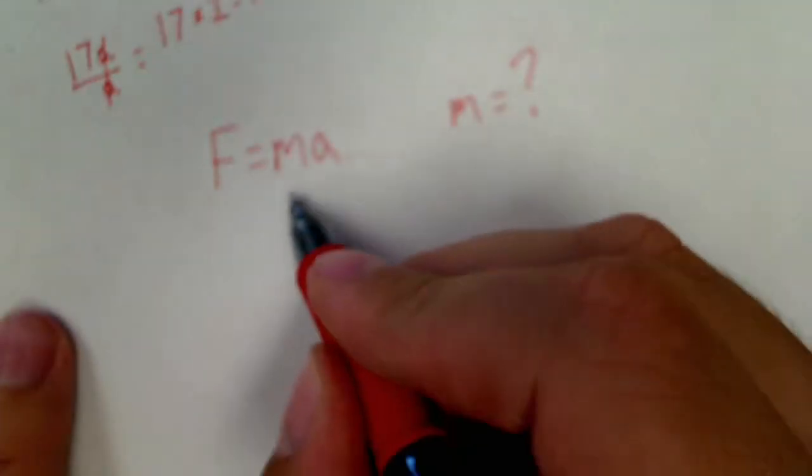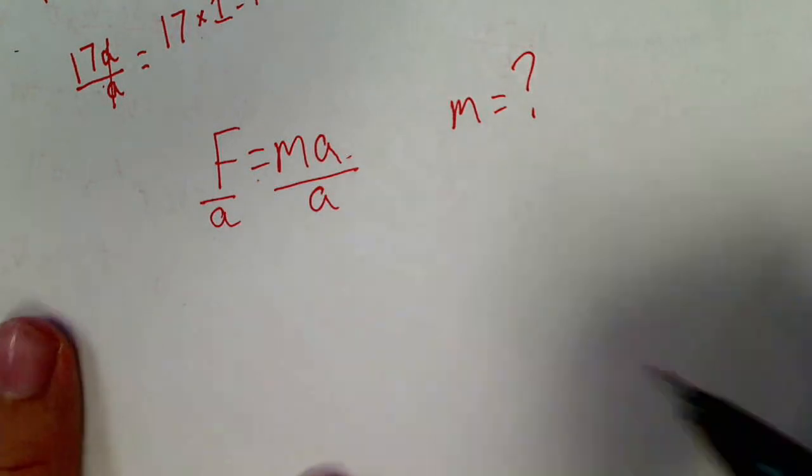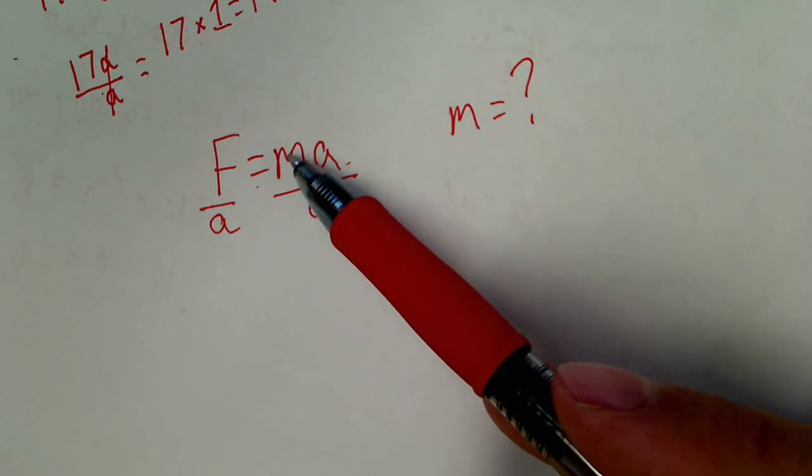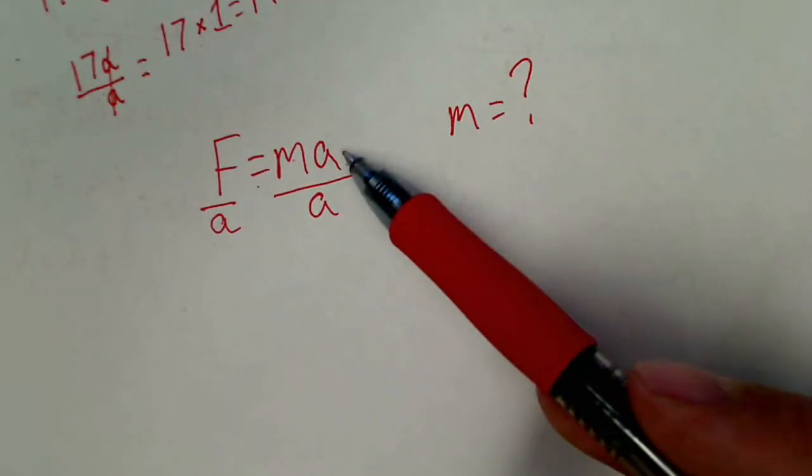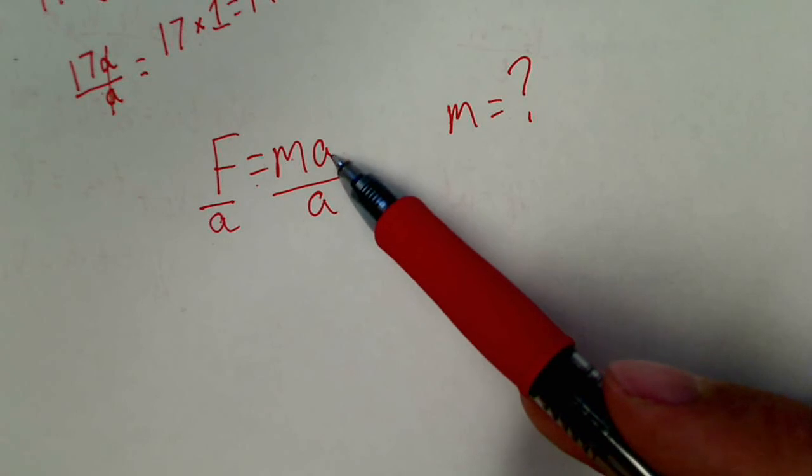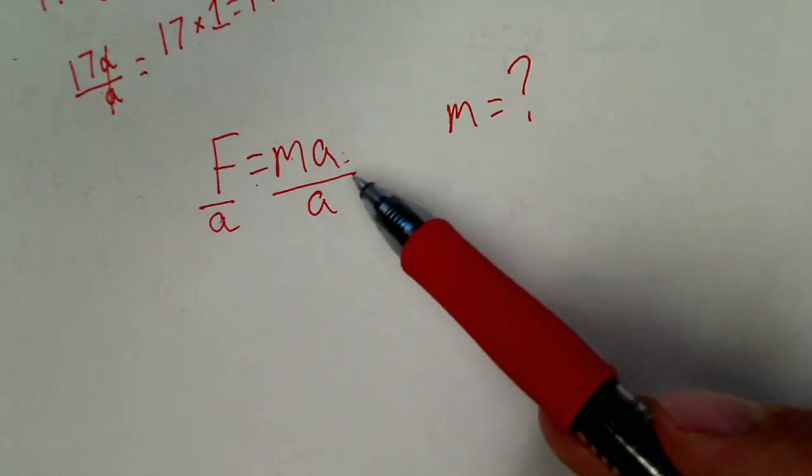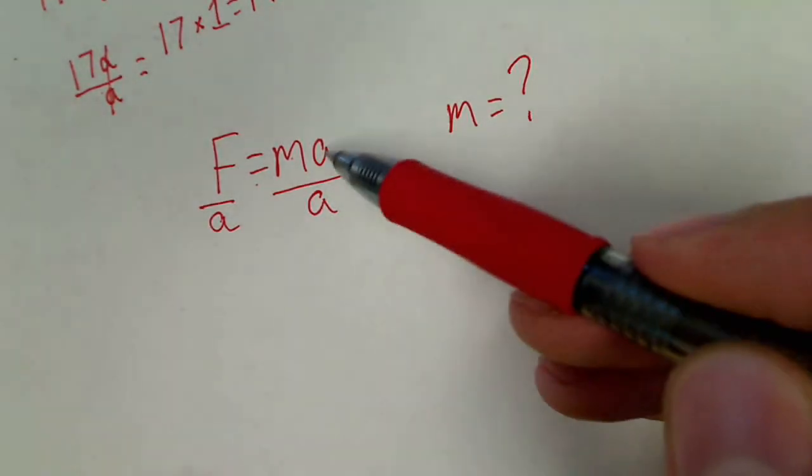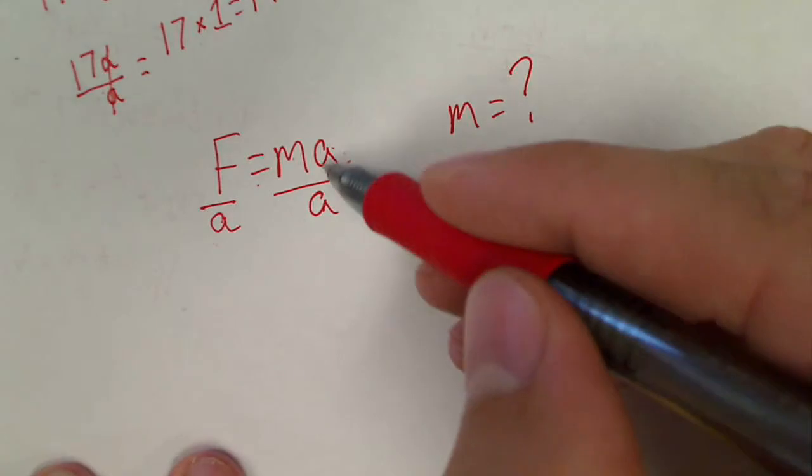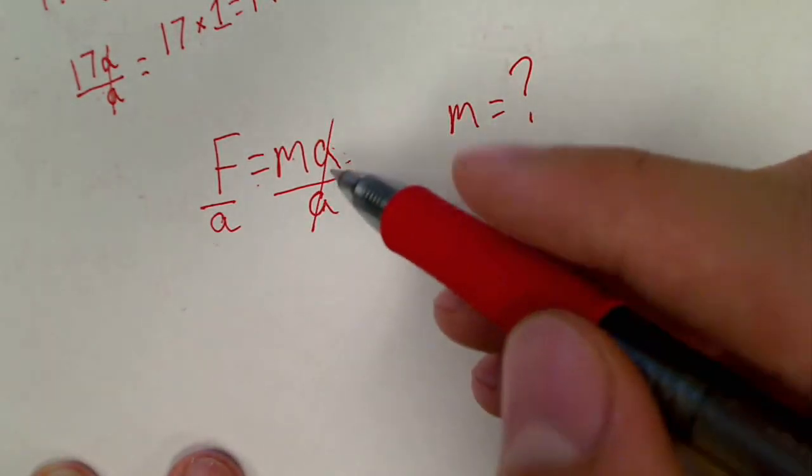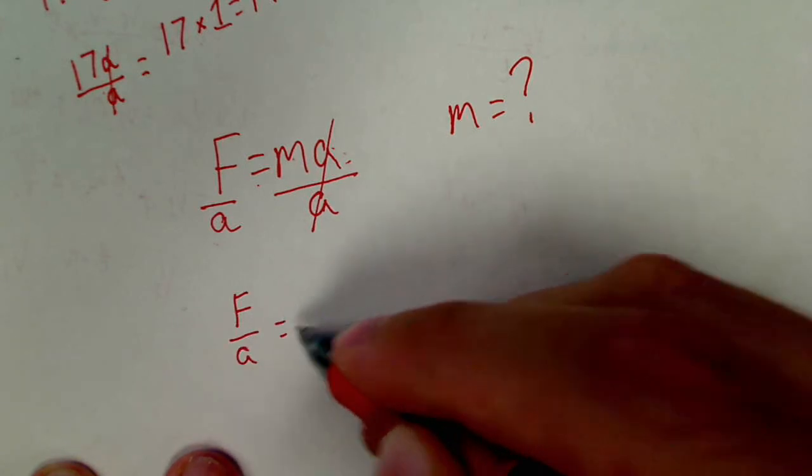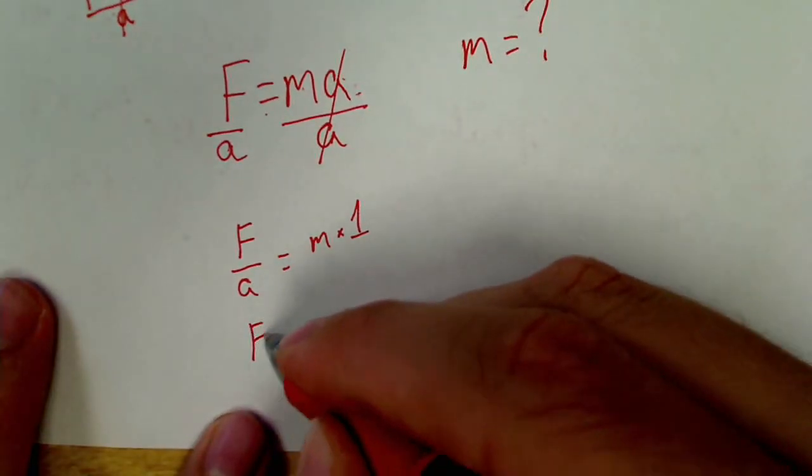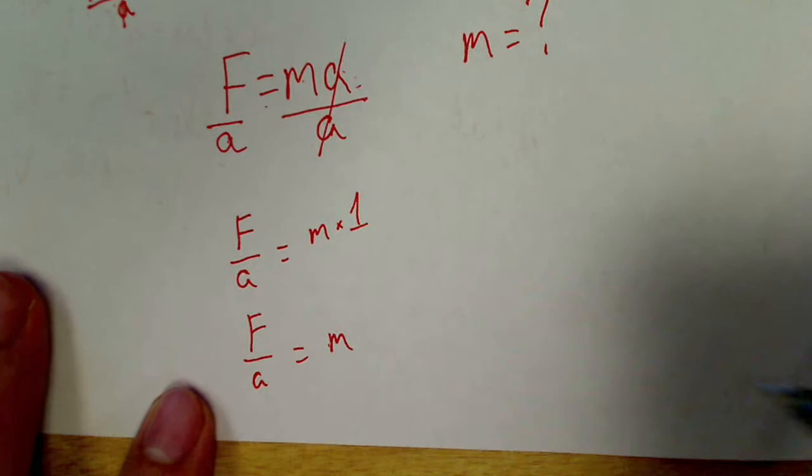So what I'm going to choose to do is divide by A. Now, how did I decide that? I decided that because I want this M by itself. I want to get M equals, and there's an A there. So how can I get rid of that A? Well, I know that A divided by A would just equal 1, and then it wouldn't matter. So I can divide this by A as long as I do it to both sides. But now A over A, that cancels. I can cross them out, which means that's like F over A equals M times 1, which that's just F over A equals M.